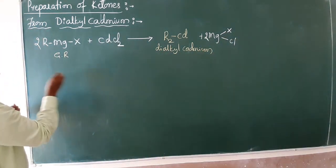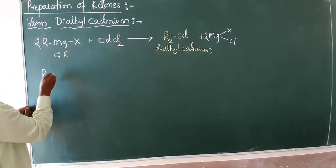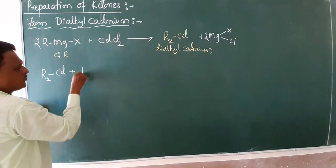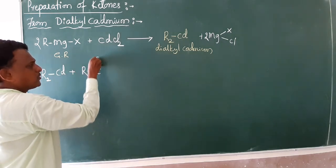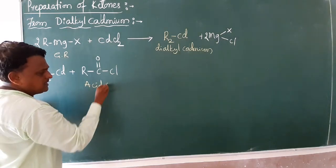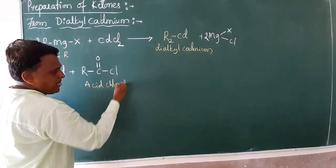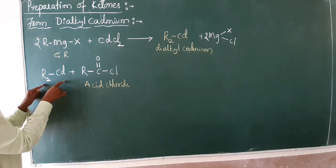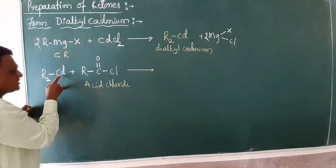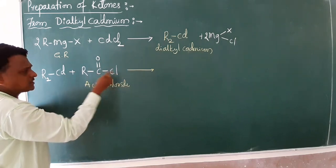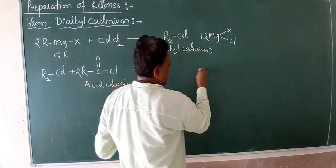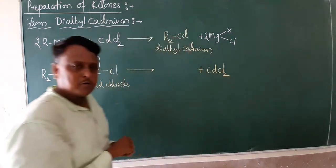And this dialkyl cadmium, R2Cd, reacts with a very important component: acid chloride. When dialkyl cadmium reacts with acid chloride, very simply keep in your mind, cadmium is replaced with Cl with 2 moles. The product formed is CdCl2. Cadmium chloride is coming out.